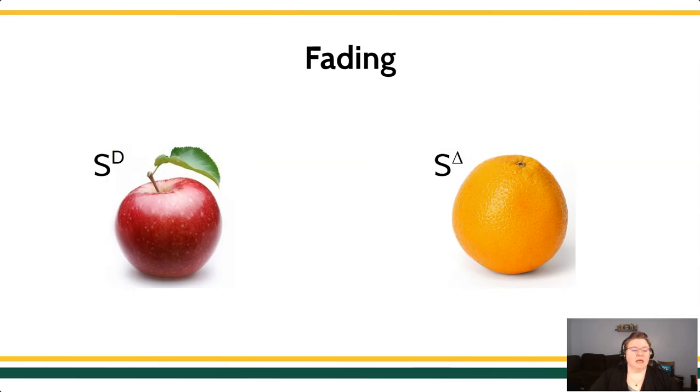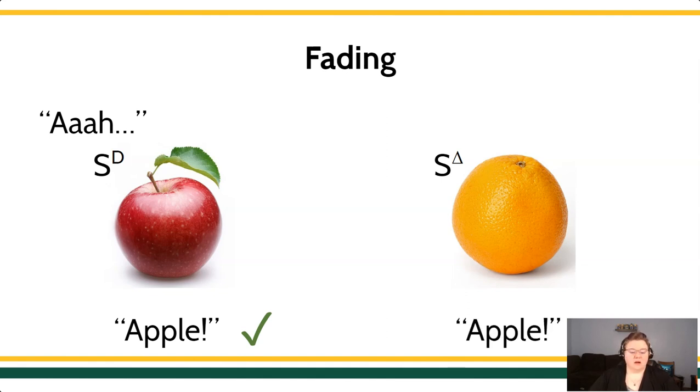The difficulty can be if we're presenting this stimulus on the left and there's no response, right? So we have no behavior occurring here. So we might have to add on an additional prompt. So in the case of this, we might give the verbal prompt and then when our learner says apple, deliver the reinforcer. But same again here, if they call this apple, do not deliver the reinforcer. So we're talking about the temporary use of a stimulus to establish a discrimination.